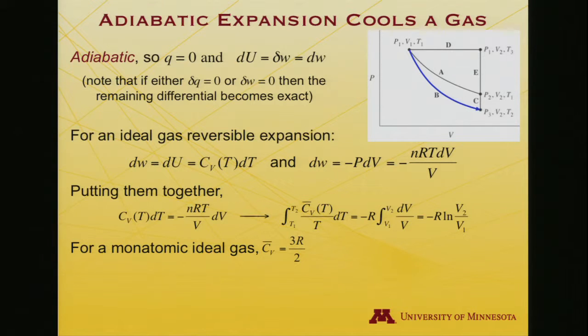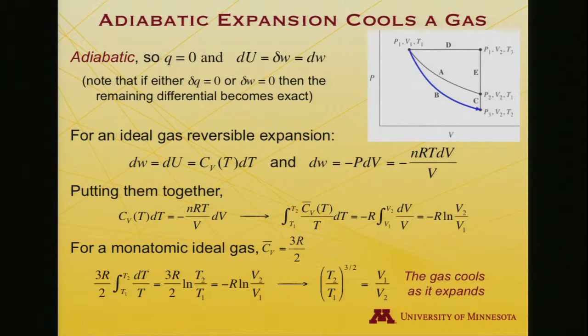For a monatomic ideal gas, I also have, from having derived partition functions and figuring out what the molar heat capacity is, it's 3R over 2. So now let me solve this other integral, this integral over heat capacity. So I pull 3R over 2 out. All that's left is integral T1 to T2 dT over T. That's the log of T2 over T1. So I have this relationship, 3R over 2 log T2 over T1 is equal to minus R log V2 over V1.